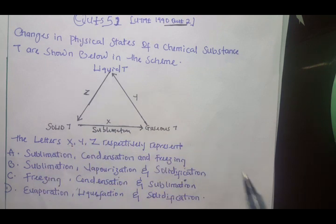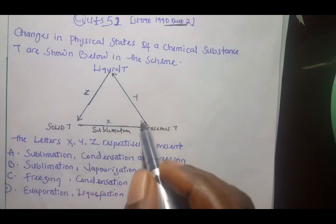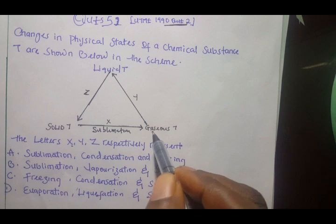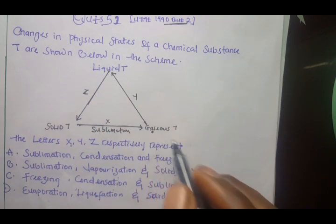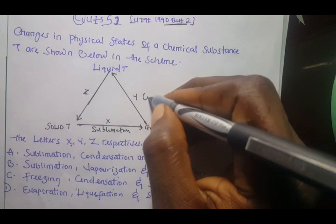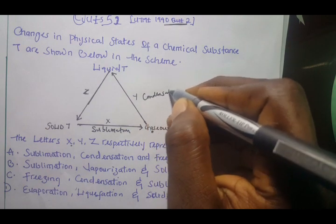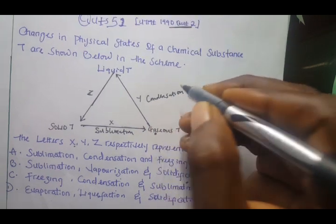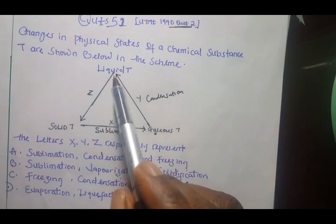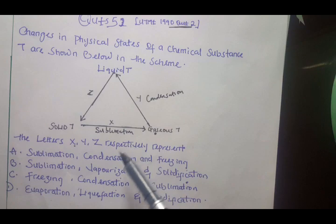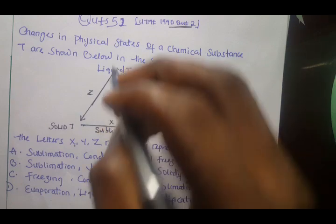Let's see X. X is moving from solid - you can see the arrow - to gas. When substance moves from solid to gas, then the substance actually sublimates, so the process is called sublimation. Y is moving from gas back to liquid. Gas back to liquid, that is called condensation, which is formation of rainfall.